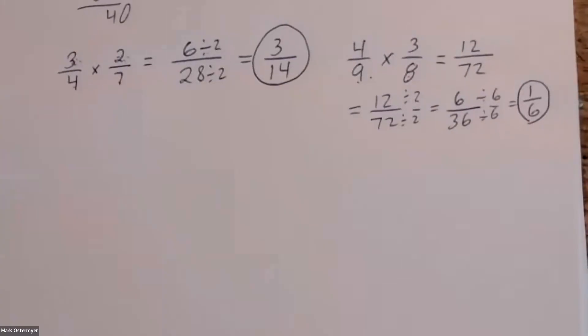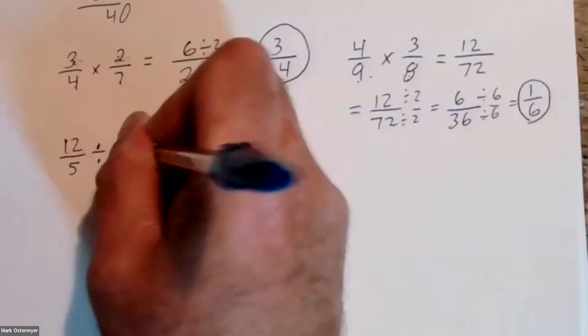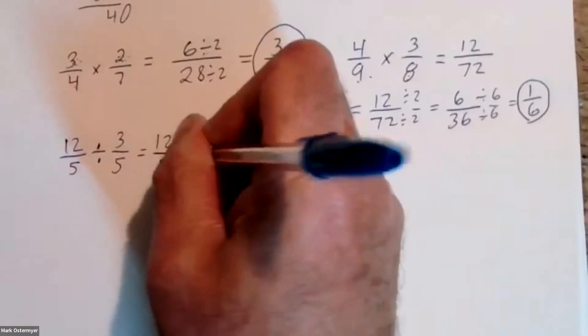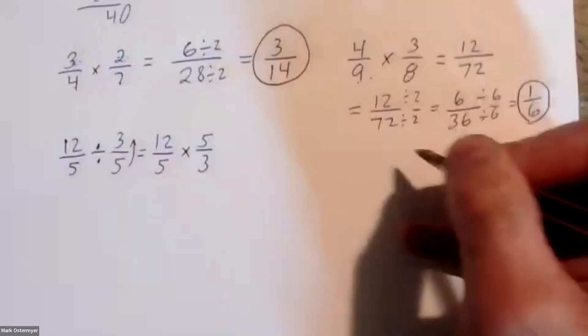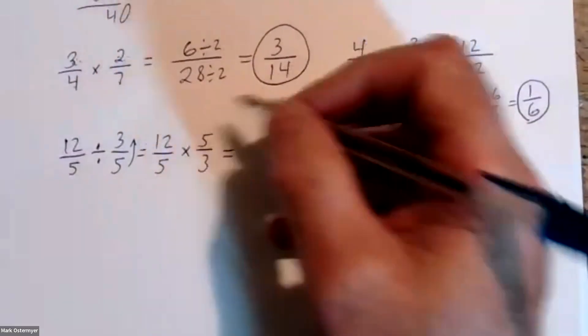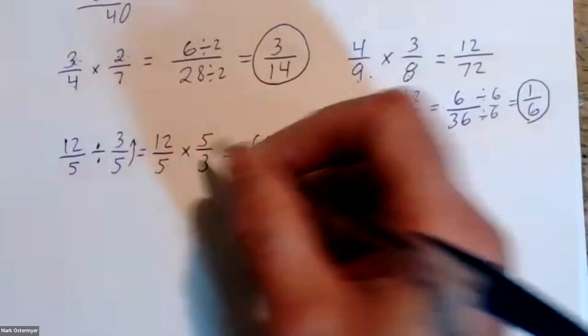Next one is twelve over five divided by three over eight. So I could change this to twelve fifths times eight over three — you have to flip the second fraction upside down. That's going to give us twelve times five is sixty...